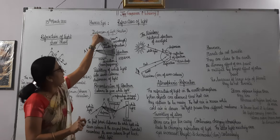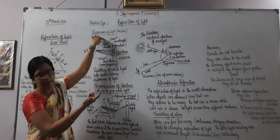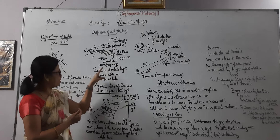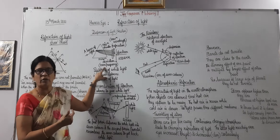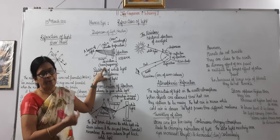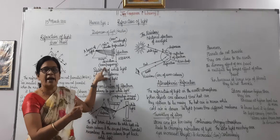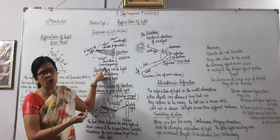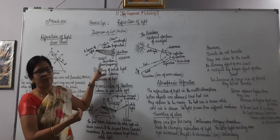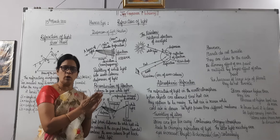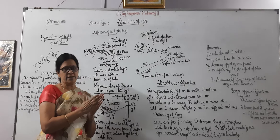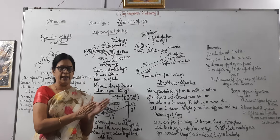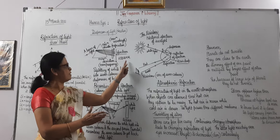Red light has maximum wavelength and violet light has minimum wavelength. Since violet has minimum wavelength, its frequency is maximum. Frequency and wavelength are inversely proportional to each other. So when white light is passed through a prism, it is divided into seven colors. This division of white light into seven colors is known as the spectrum.